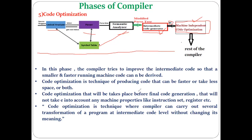What exactly happens in the machine-independent code optimization phase? Whatever intermediate code is generated, only some changes are made to it — and those changes must be done without affecting the final result. For example, if you have written a program to compute 2 plus 3 with a result of 5, the code optimizer makes changes to the program, but the result must still come out as 5.